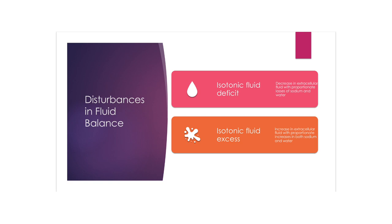An isotonic fluid deficit is a decrease in extracellular fluid with a proportionate loss of both sodium and water — that's normal. The most common form of fluid loss is an isotonic fluid deficit, often the result of excessive sweating. Combining increased physical exertion with other comorbidities may complicate the fluid loss and cause additional problems.